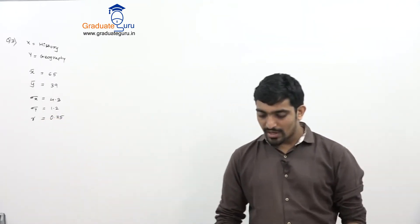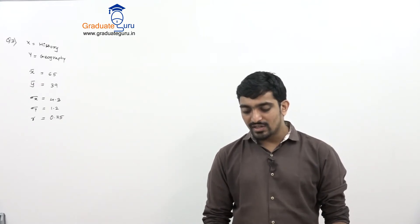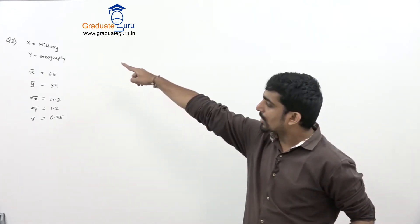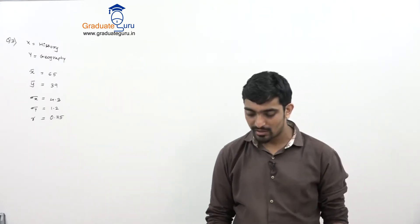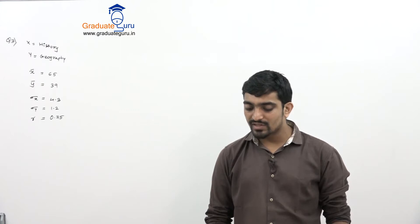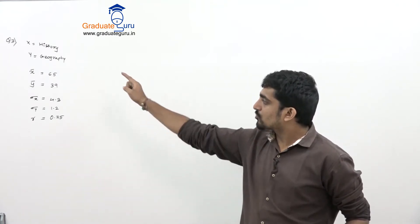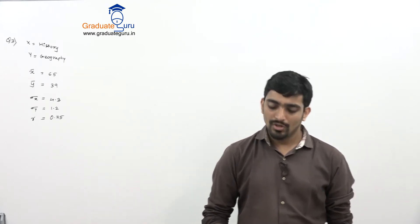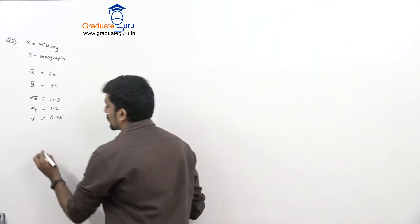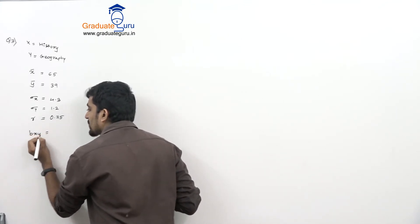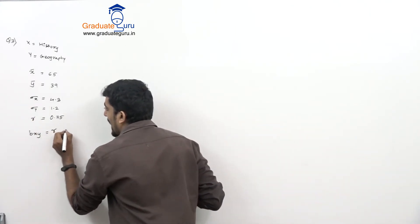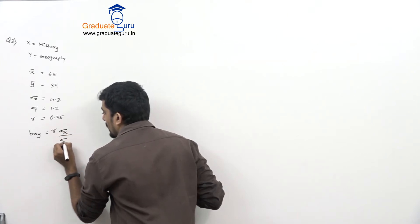Now we are asked: first, estimate marks in history of a student securing 37 marks in geography — meaning find x when y = 37. Second part asks marks in geography of a student with 60 marks in history — meaning find y when x = 60. So both cases are required: x on y and y on x. For x on y, bxy = r * sigma x / sigma y.